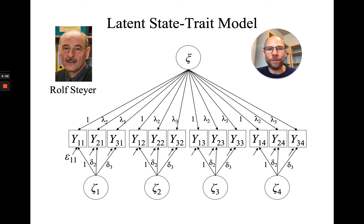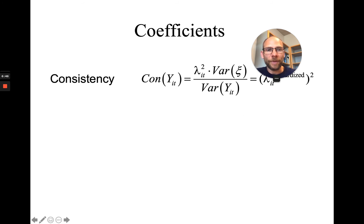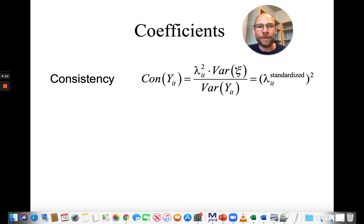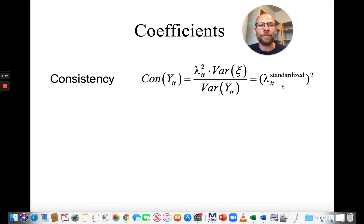Let's look at how to extract consistency, occasion specificity, and reliability coefficients from this measurement model. The consistency coefficient looks at the trait variance component relative to total observed variance — that's the unstandardized trait loading squared times the variance of the trait factor, divided by the model-implied observed variance. An easier way is to take the standardized trait factor loading lambda (standardized) and square it. Consistency is the proportion of variance in an observed variable due to trait effects. For example, a consistency coefficient of 0.7 means 70% of the variance is trait variance, pointing to a more trait-like than state-like measure.